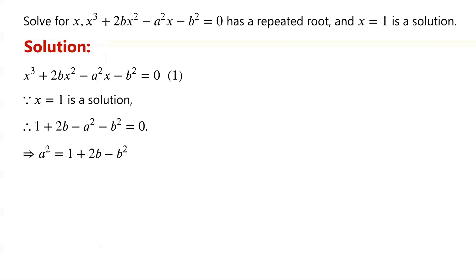Then substitute A squared into equation 1. We have X cubed plus 2BX squared minus (1 plus 2B minus B squared) times X minus B squared equals 0.